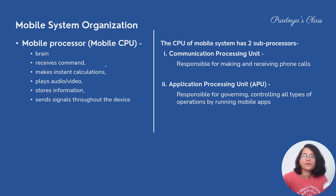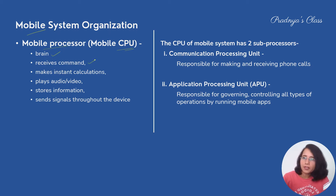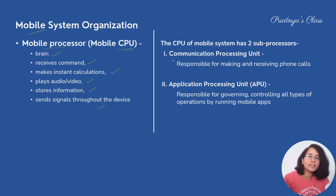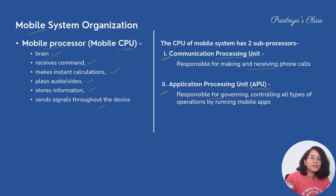Now let's study the components of the mobile system. The first component is the mobile processor — the mobile CPU — which is also the brain of the mobile. It receives commands, does calculations, plays audio and video, stores information, and sends signals throughout the device. The mobile CPU is divided into two parts: the Communication Process Unit, responsible for making phone calls, and the Application Process Unit (APU), responsible for governing and controlling all types of operations by running mobile apps.